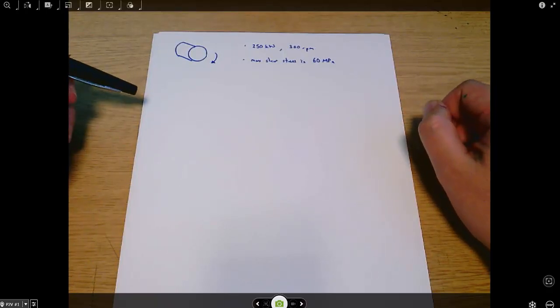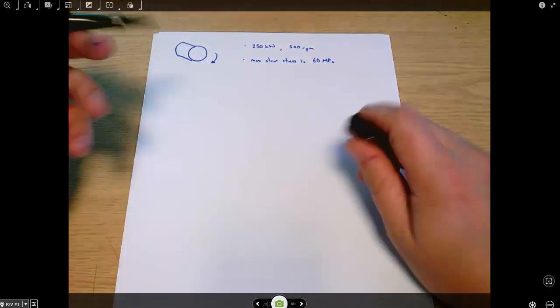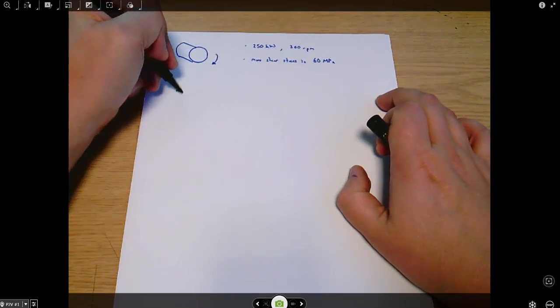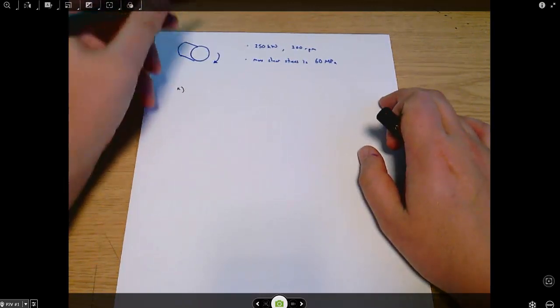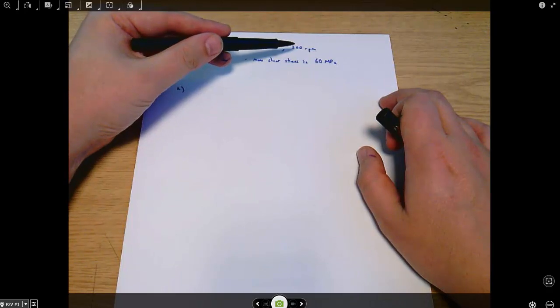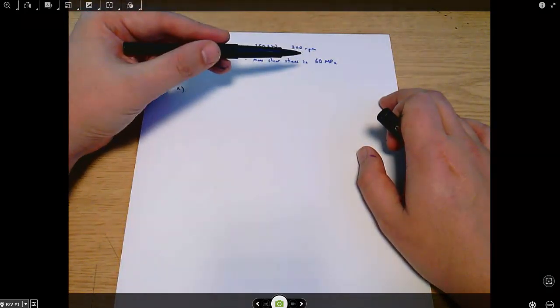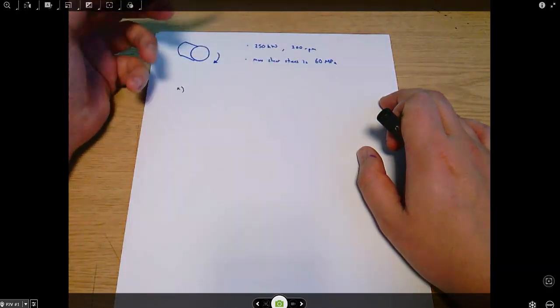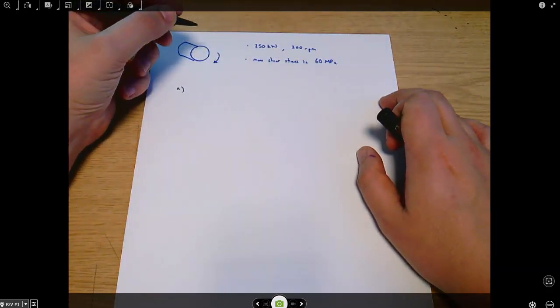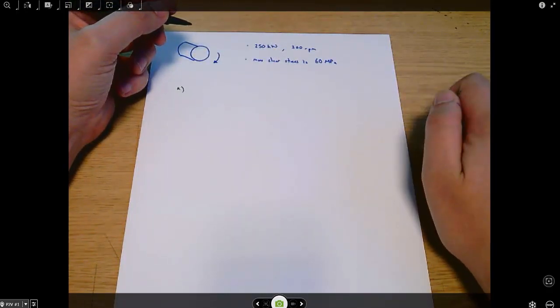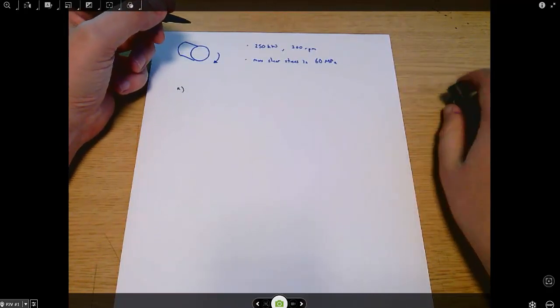This is a question about torsion in shafts. In part A we're asked about a solid shaft. It is rotating at 300 rpm, transmitting 250 kilowatts, and there's a maximum shear stress of 60 megapascals. We want to calculate the necessary shaft diameter.